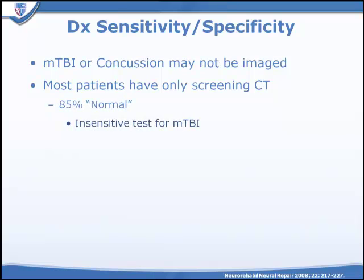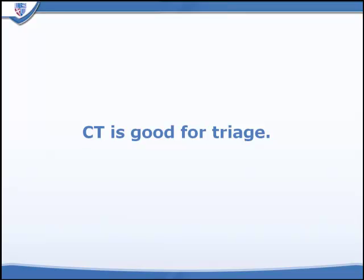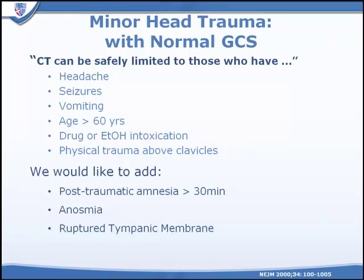We currently only image patients with relatively severe levels of traumatic brain injury, and mild TBI or concussion is usually not imaged. When we do image those patients, 85% are normal by CT — probably not because they are normal, but because CT is a relatively insensitive test for mild TBI. CT continues to be good for triaging patients, but CT is really not enough. Additional indications should include post-traumatic amnesia lasting more than 20-30 minutes, loss of first cranial nerve function or anosmia, and ruptured tympanic membranes which may indicate a blast overpressure wave.